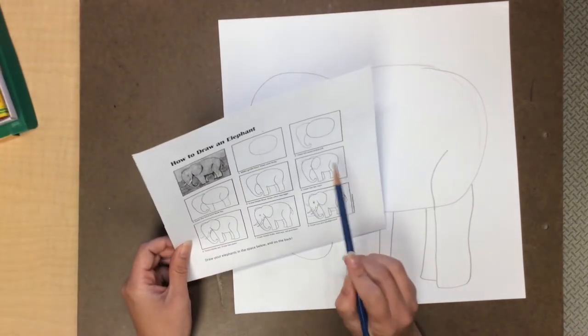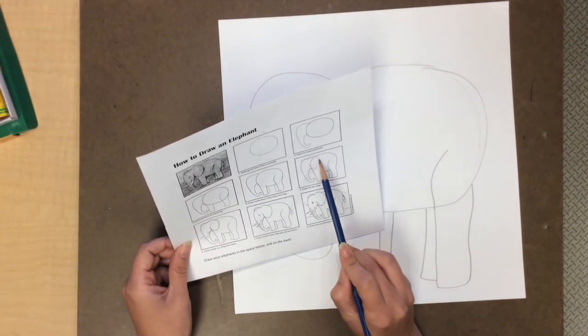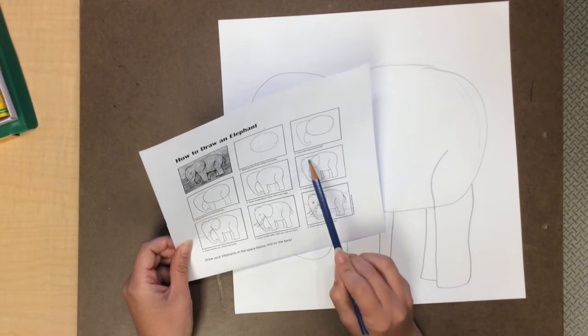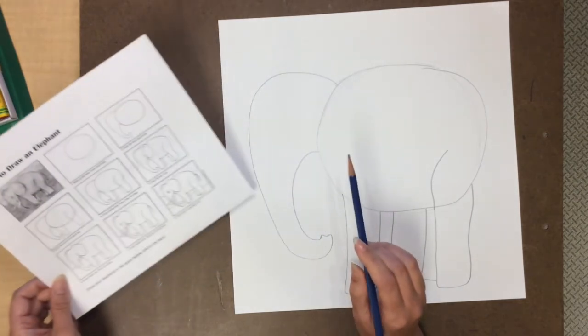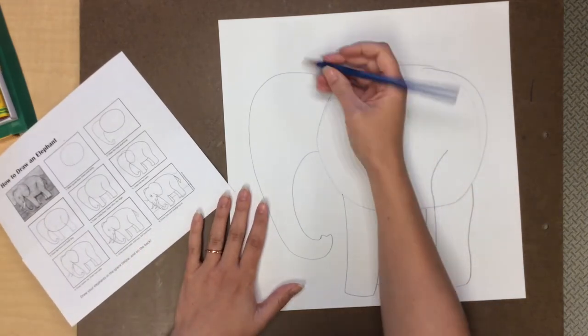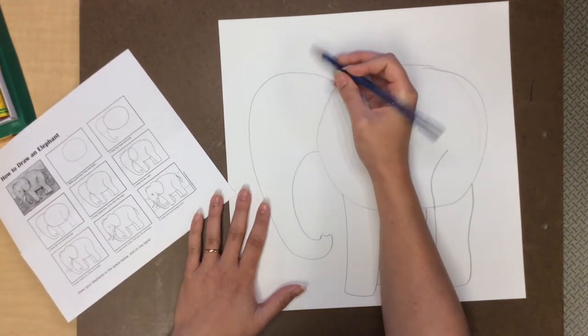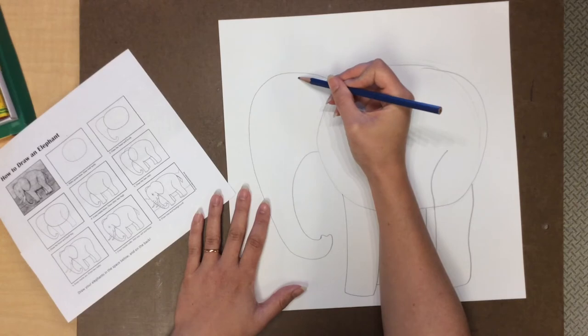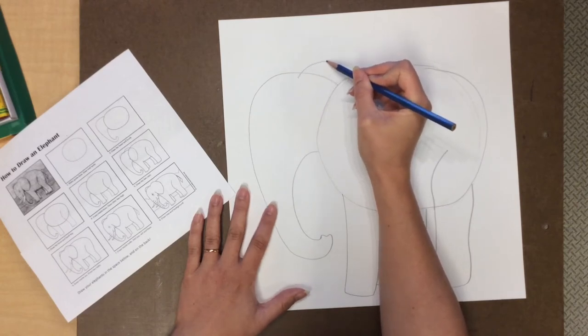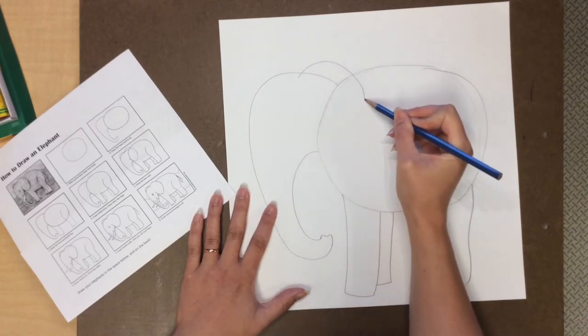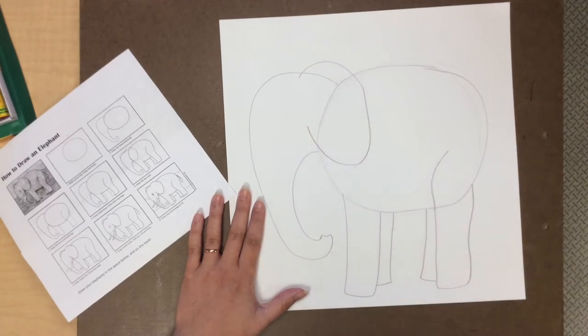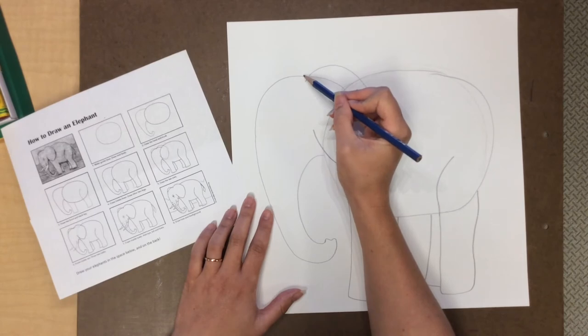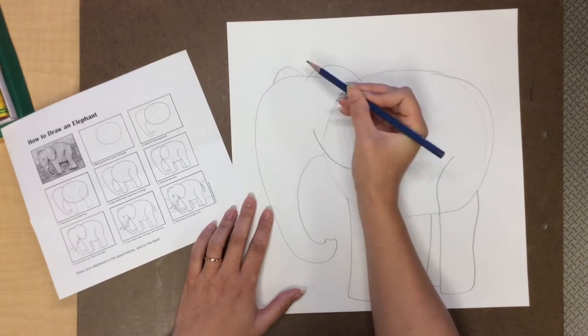Now the next step is important. We're gonna draw another line to show the ear. The ear is connected to the head and kind of overlaps the body. I know from looking at pictures of elephants that they have large ears. So I'm gonna draw this rounded shape. Very large. It's almost like an oval and maybe the other ear is just peeking out over here.